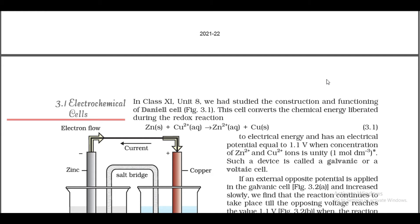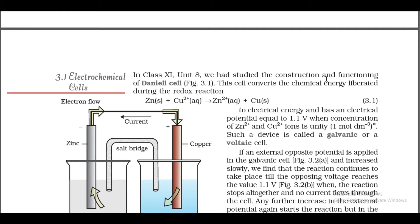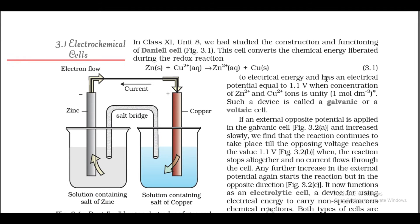In Class 11th Unit 8, we studied the construction and functioning of the Daniel cell. The cell converts the chemical energy liberated during the redox reaction Zn + Cu²⁺ → Zn²⁺ + Cu to electrical energy and has an electrical potential equal to 1.1 volt when the concentration of Zn²⁺ and Cu²⁺ ions is unity — one molar. Such a device is called a galvanic or voltaic cell.